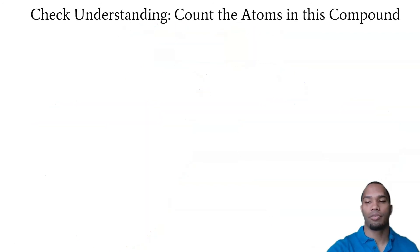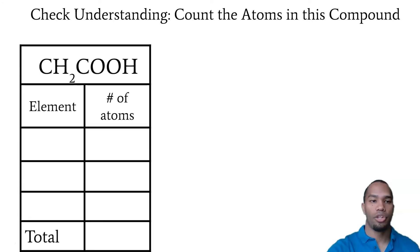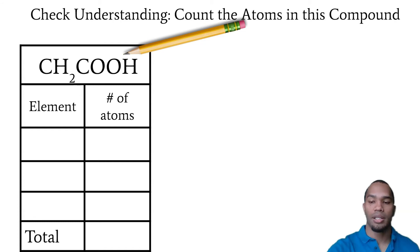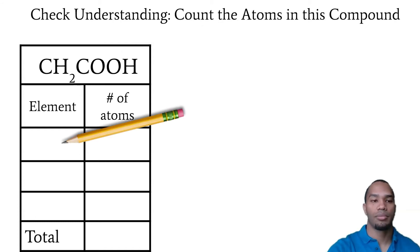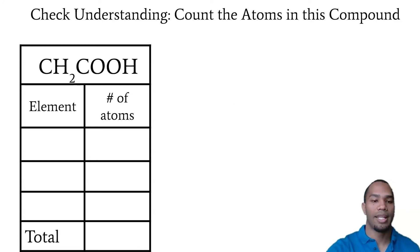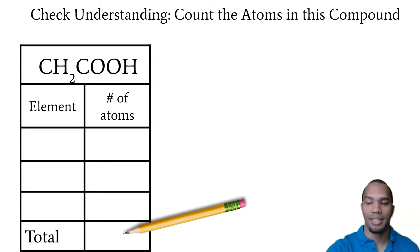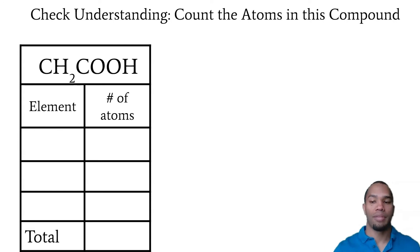Alright, let's check for understanding. You're going to take a look at this compound. You're going to write each individual element on the left side and then count how many atoms you have. At the bottom, give me the total amount of atoms in this compound. I'm going to give you two minutes to figure this out.